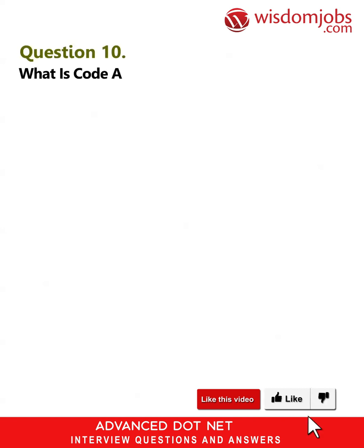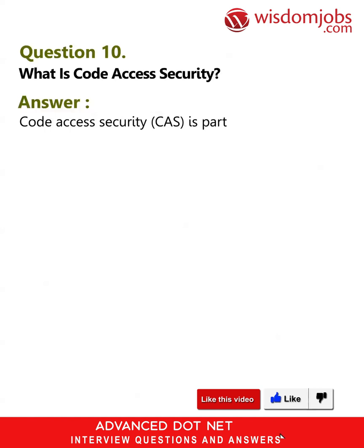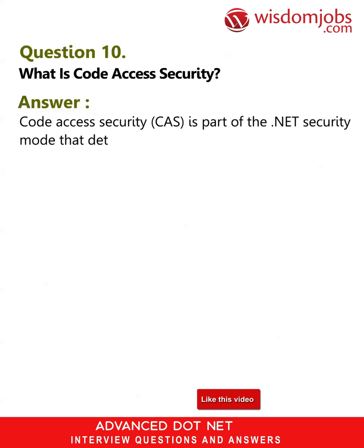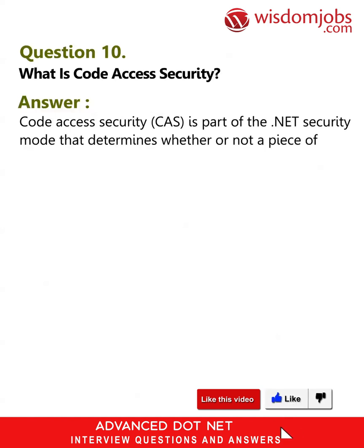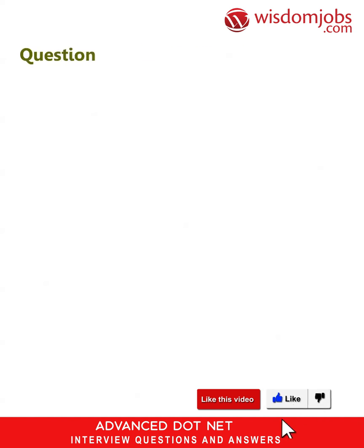Question 10: What is Code Access Security? Answer: Code Access Security (CAS) is part of the .NET security model that determines whether or not a piece of code is allowed to run and what resources it can use while running.